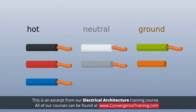Wire insulation is color-coded to indicate whether they are hot, neutral, or ground.